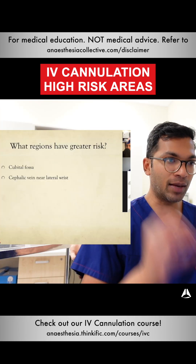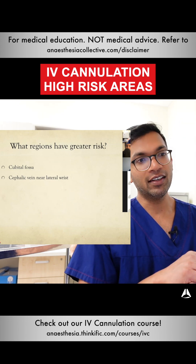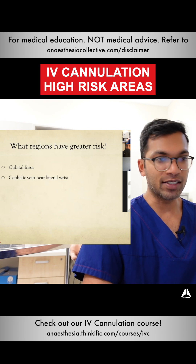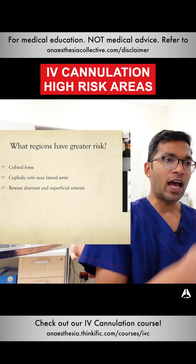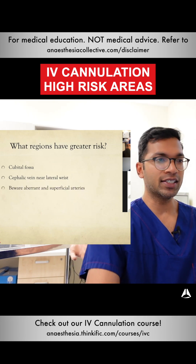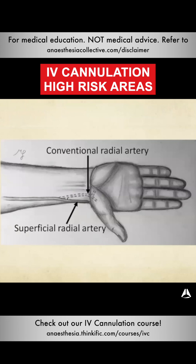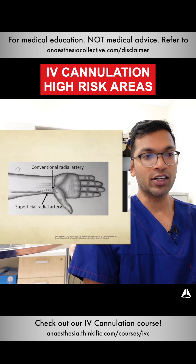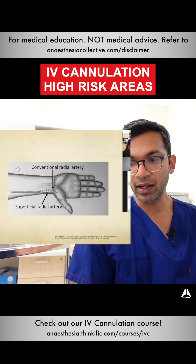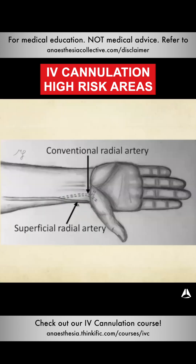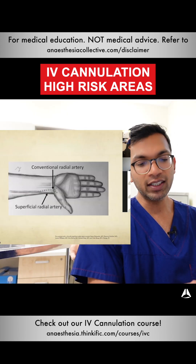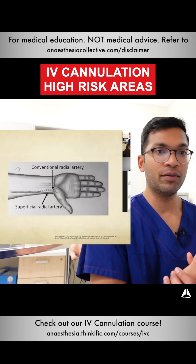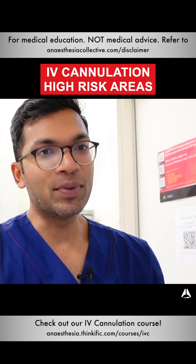So cubital fossa, absolutely. But also the cephalic vein near the lateral wrist — kind of that anatomical snuff box area — is a bit of a danger zone. You wanna be aware of aberrant and superficial arteries. This one shows the conventional radial artery, which just goes on that lateral side of the anterior wrist, and you can kind of feel that on yourself — that's where most people take a pulse. Every now and again you get this superficial radial artery that traverses really near where you might do the cephalic vein puncture, and just know that it happens often enough.